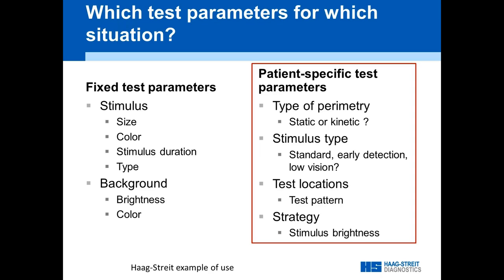Which test parameters for which situation? On the left-hand side, you can see a couple of things which theoretically could be changed but practically nobody does, like stimulus size, color, duration, or background. Typically you can consider these as fixed. But then there are four things where, based on your patient's disease, you may make a different decision on how you test.